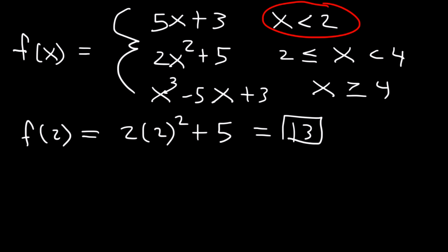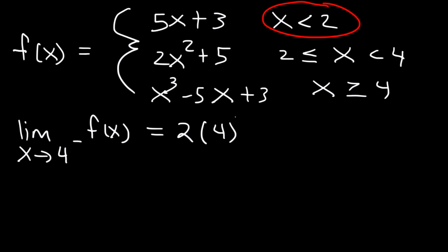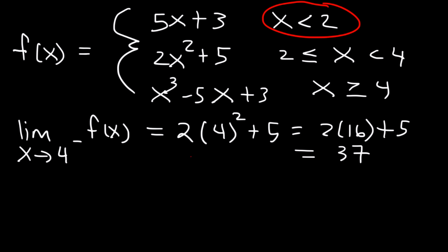What is the limit as x approaches 4 from the left side? From the left side of 4, where x is less than 4, we use 2x squared plus 5. So it's 2 times 4 squared plus 5. 4 squared is 16, 2 times 16 is 32, and 32 plus 5 equals 37.